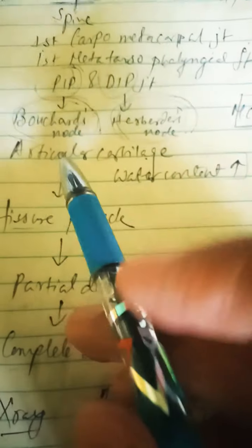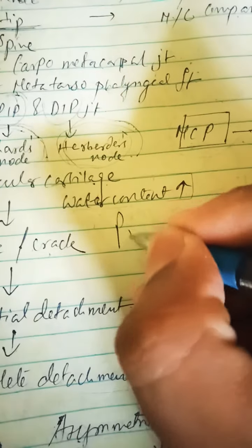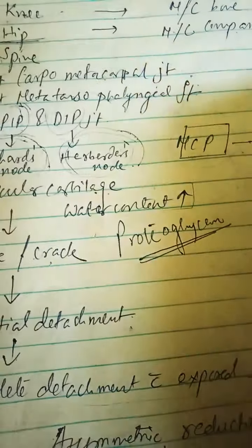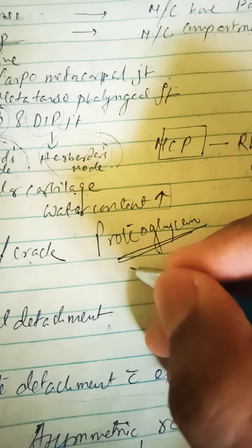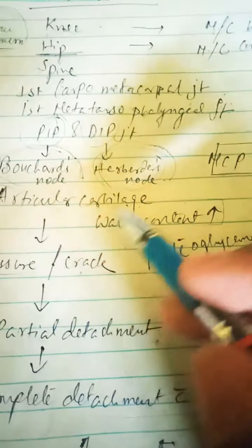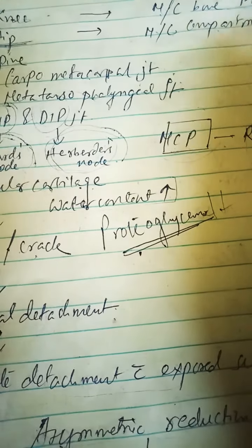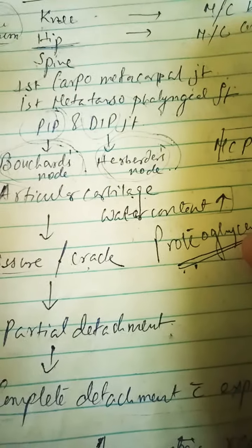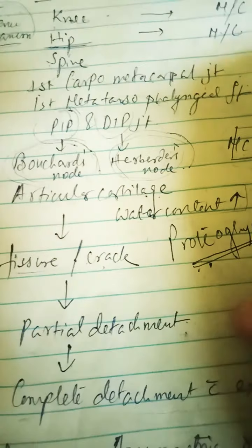Coming to the pathogenesis: the articular cartilage contains mainly proteoglycans. Collagen fibers are also present — chondroitin sulfates, type 1 and type 2 collagens. There is progressive destruction with increased water content, progressive destruction of proteoglycans, and catabolism of the cartilage. As a result, the cartilage becomes weak over time.